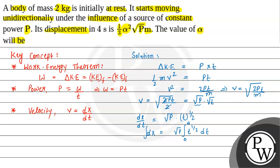So x equals square root of p. Integrating t to the power 1/2, we get t to the power 3/2 divided by 3/2, with the limit from 0 to 4.